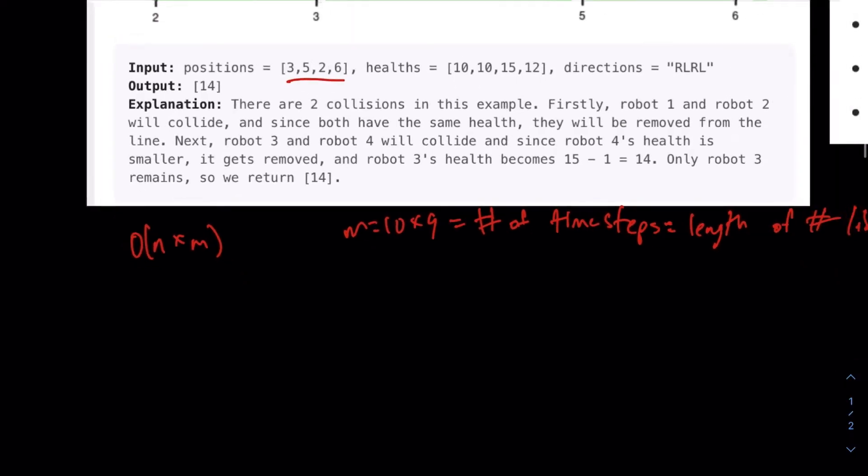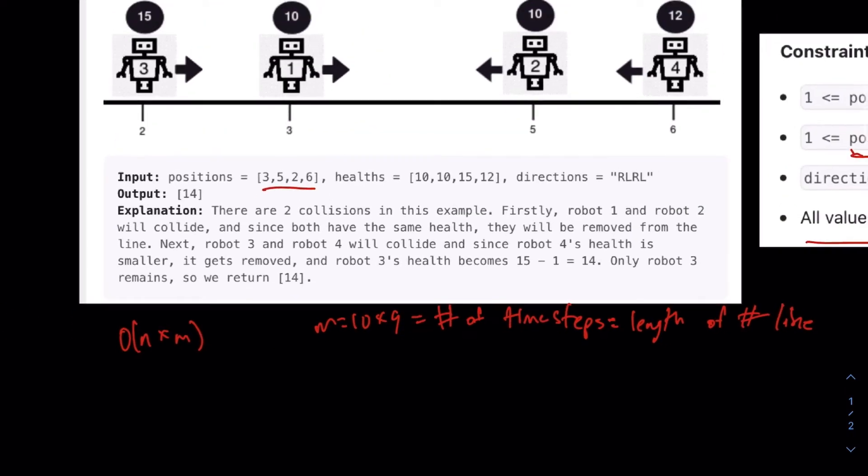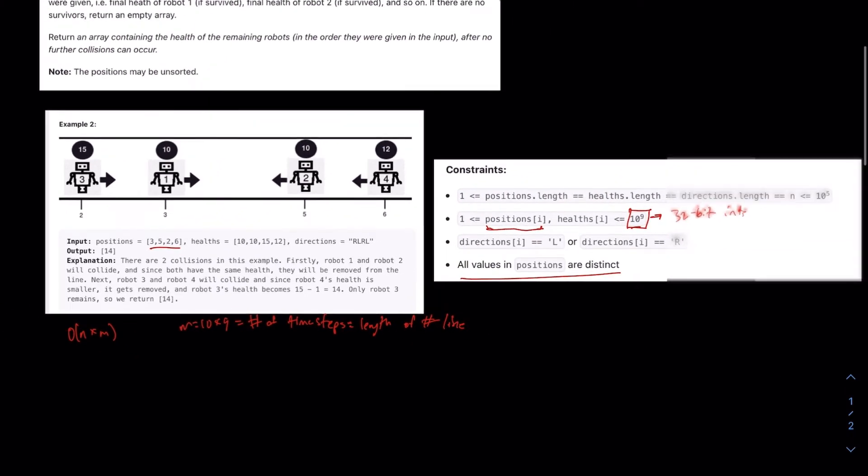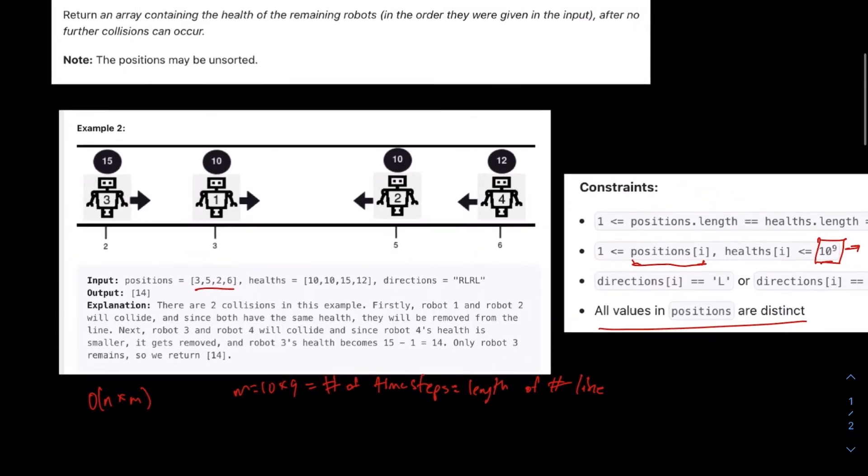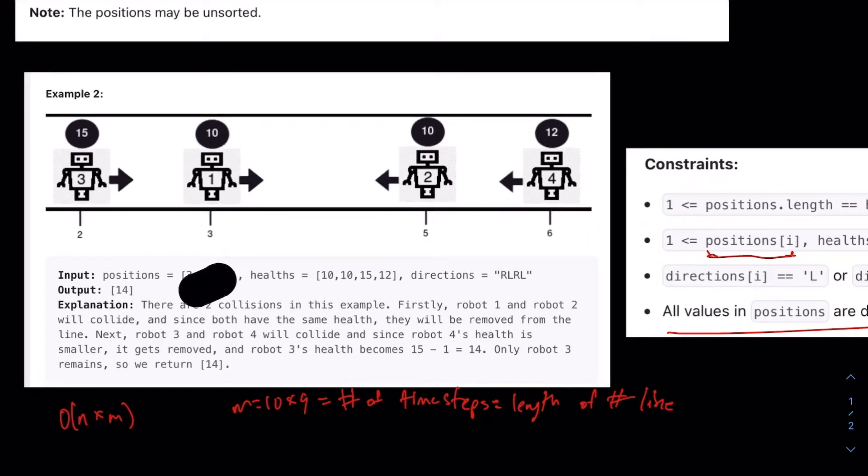Then the runtime would be O of N times M. And this is way too big. So we have to come up with a way to solve it in O of N instead. Our initial naive approach, although it works in theory for smaller input sizes, doesn't work for everything. So looking at this problem, the first thing to note is, is there a specific order by which these robots will collide?